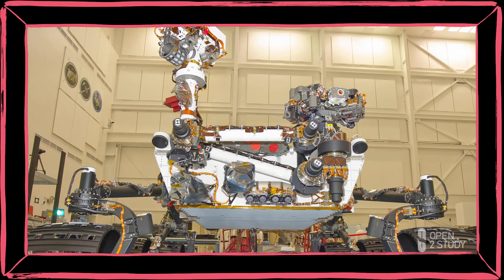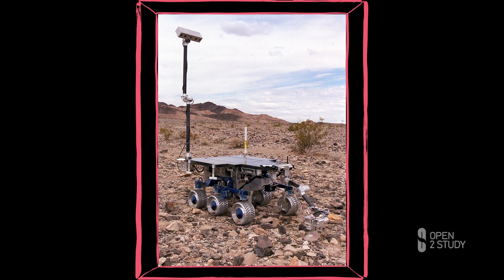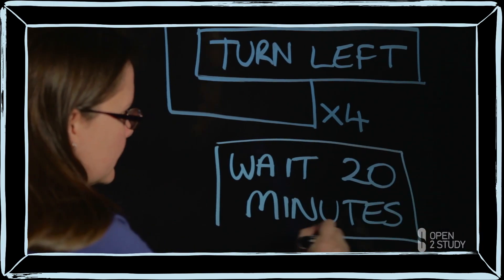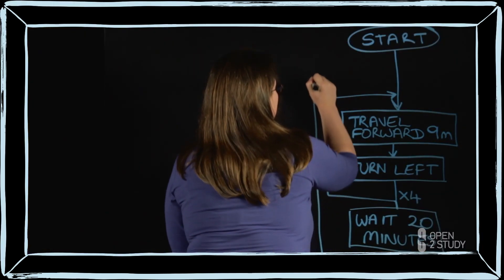Humans have eyes, ears and touch to help them sense what's going on around them. So we'll look at robotic sensing — how do robots sense their environment? Finally, we'll be looking at the information that we have from the sensors to make decisions about how our robot should move.